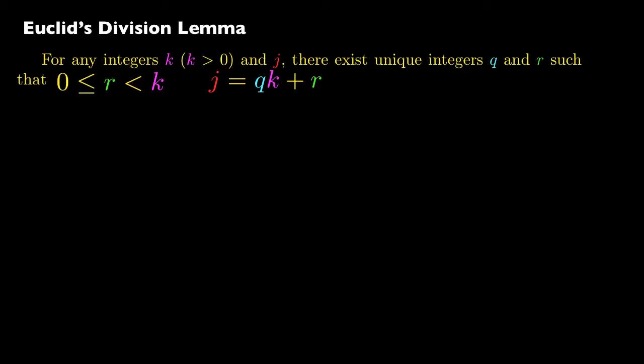For any integers k, where k is positive, and j, there exist unique integers q and r such that r is greater than or equal to 0 and less than k, and j is equal to qk plus r. What does this mean in actual meaning?